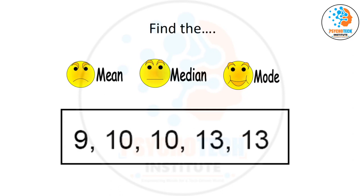The median is 10. Good. The mode is 10 and 13 — because 10 is repeated 2 times and 13 is also repeated 2 times, so there are 2 modes. That is the important point about mode: when two values share the same frequency, you get two modes.